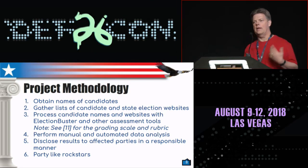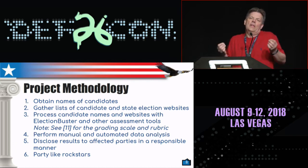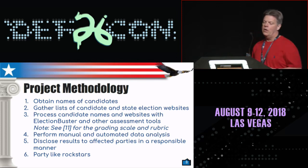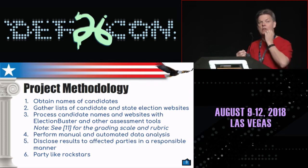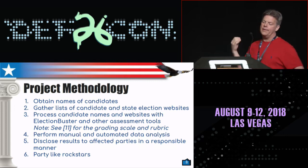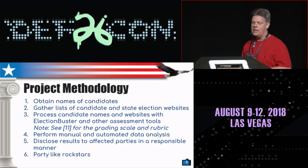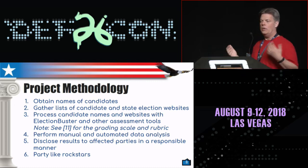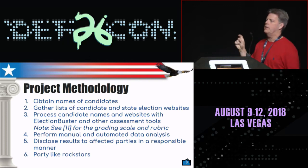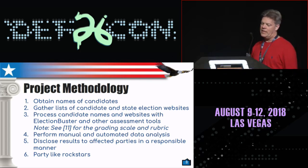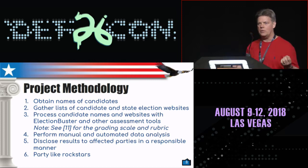This is how we do our Election Buster work. Let's say we're interested in a specific office and analyzing that — we'll obtain a list of candidates vying for that office. We'll also get state election websites that we may be interested in as well. We process all of that through our Election Buster tool, and we have other assessment tools and a grading rubric that we use at the end. We do a lot of manual analysis. We've automated a lot of that, but there's still a ton to do. There have been several nights where I sit in the basement and page through a thousand different results or web pages that we went and found. Once we find issues, we do attempt to practice responsible disclosure.